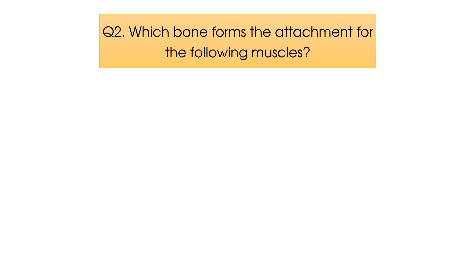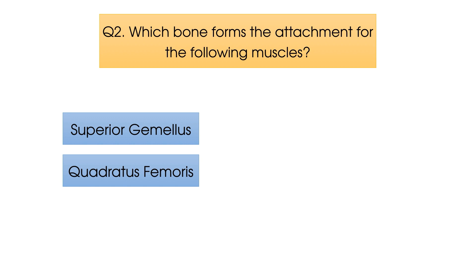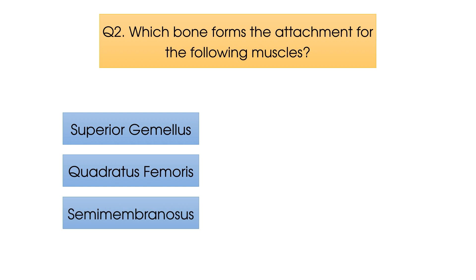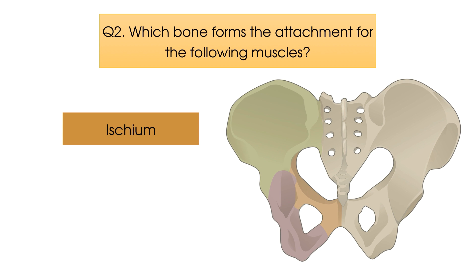Question number two: which bone forms the attachment for the superior gemellus muscle, the quadratus femoris muscle, and perhaps the biggest clue, the semimembranosus muscle? Time's up. The bone in question is the ischium, highlighted here in brown, which forms part of the pelvic bone along with the ilium and the pubis.